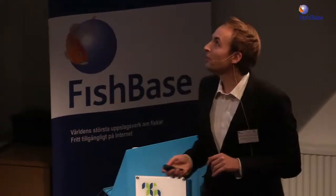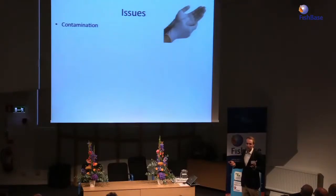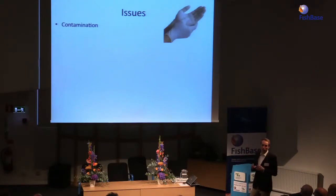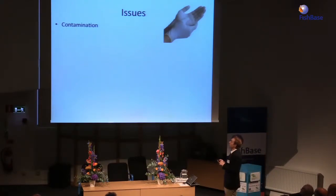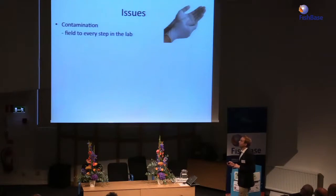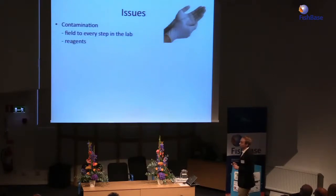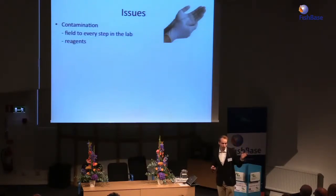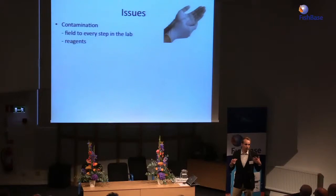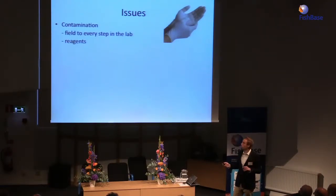This sounds easy but in fact it's not. There are a lot of issues that need to be considered when working with metabarcoding and producing large amounts of sequencing data from environmental samples. One of the most severe is contamination, which can happen from the field where you take many samples all the way to the lab and sequencing. We've even seen that reagents used for setting up PCR and sequencing can contain plant material and sometimes mammal genetic material — a huge problem.